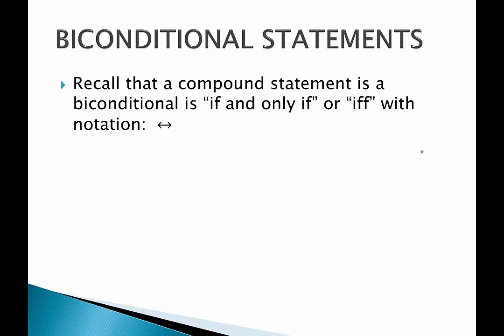A biconditional statement is a statement of the form if and only if. So P, if and only if Q. We can simplify it down to IFF, that's totally allowed. And the notation is an arrow facing either way. So we would say P, if and only if, Q.